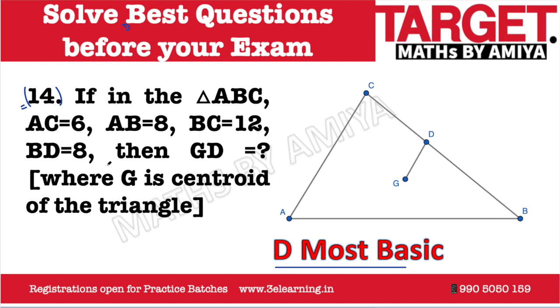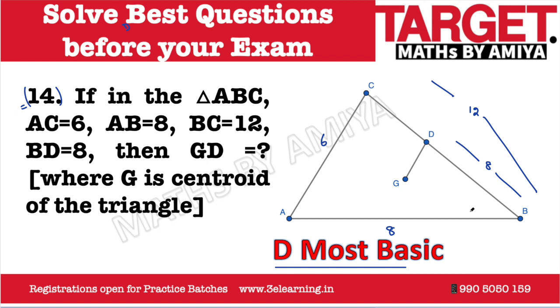So, what is given in the figure? We have AC is 6 units. We have AB is 8 units and we have BC — the entire BC is 12 units. It is given. Also given: BD is 8 units.